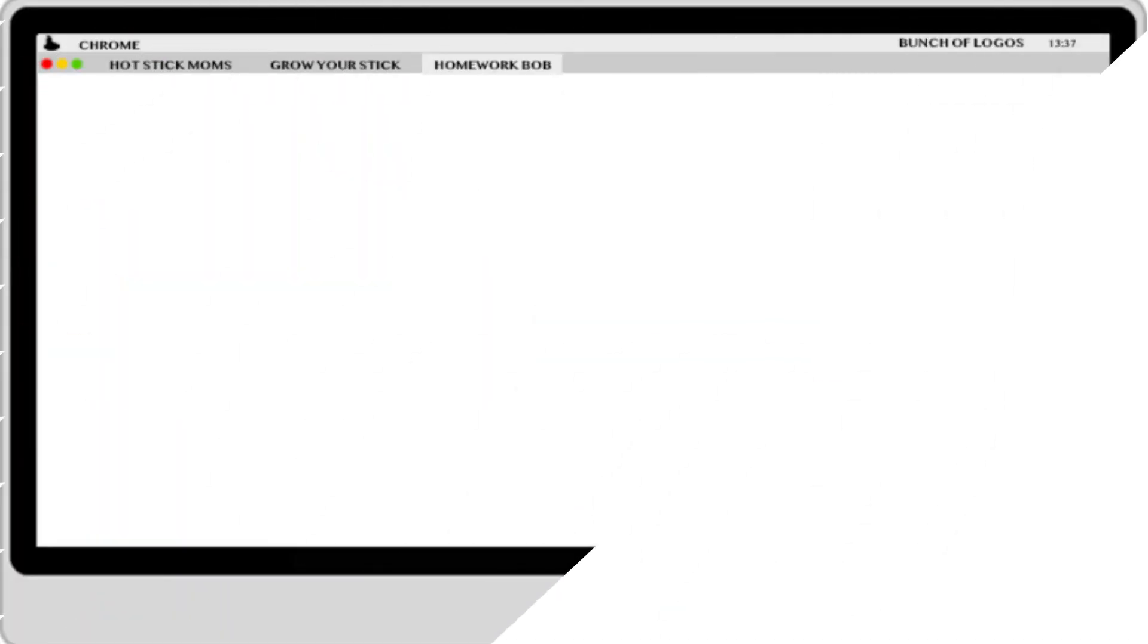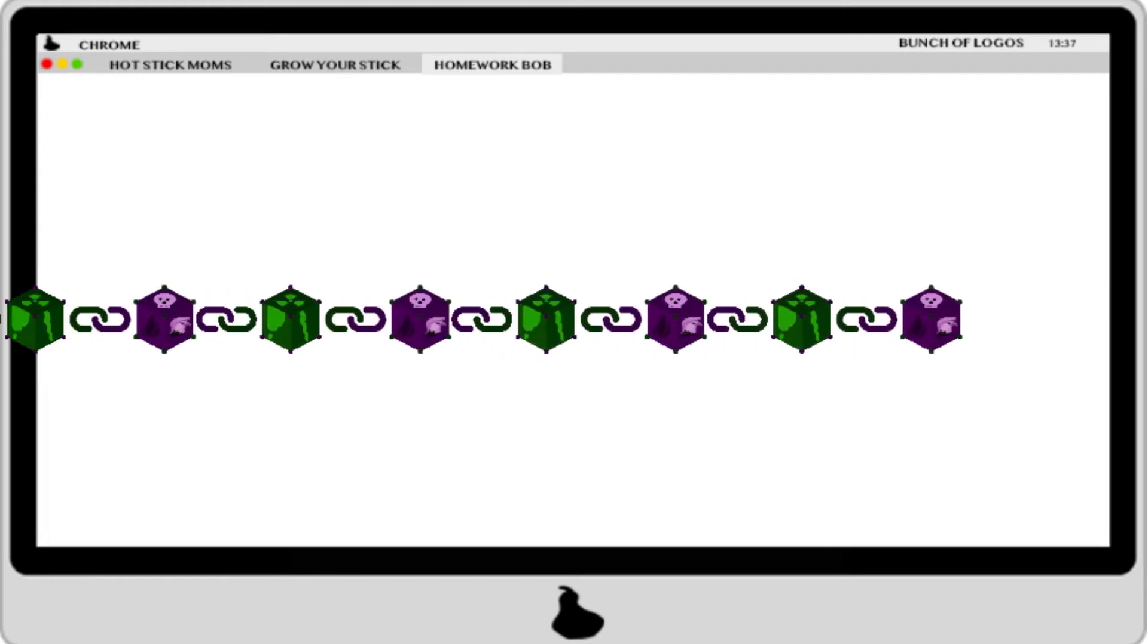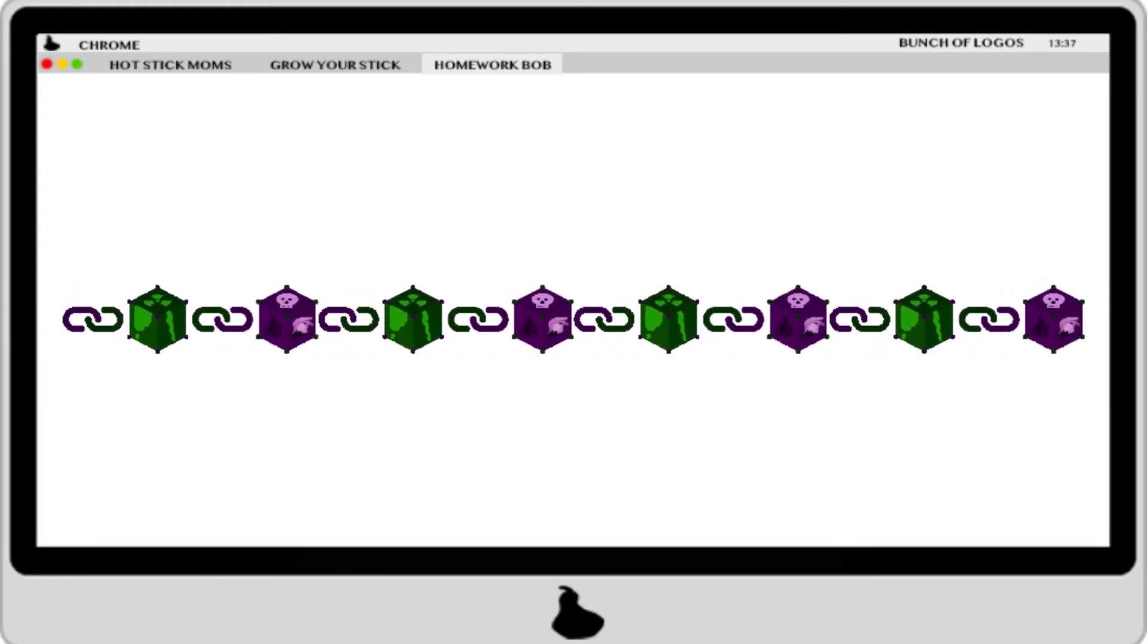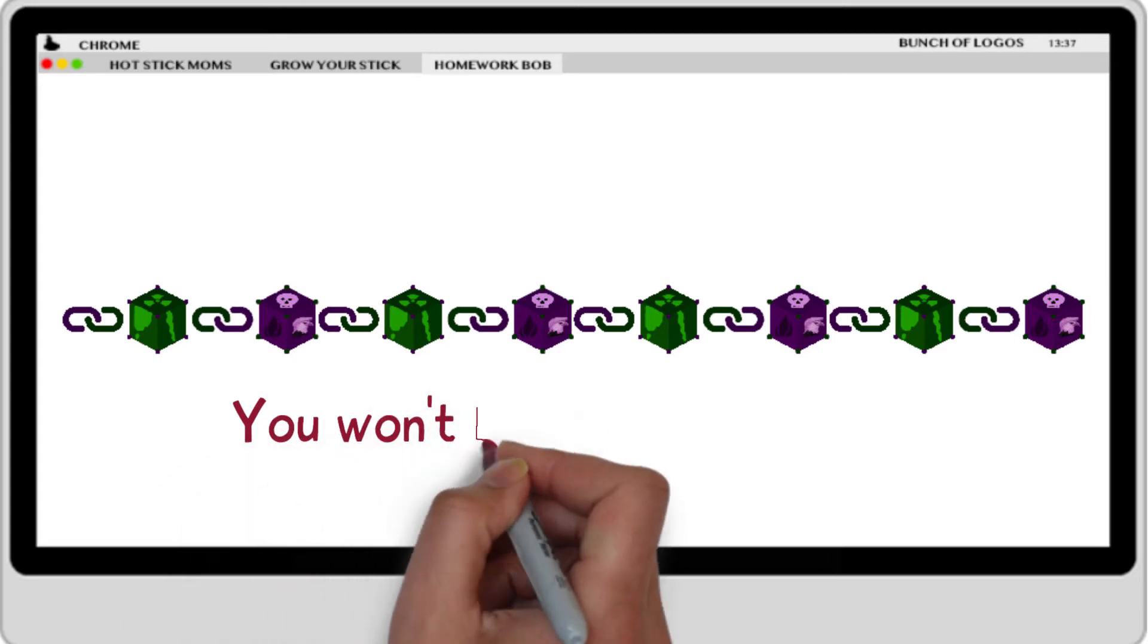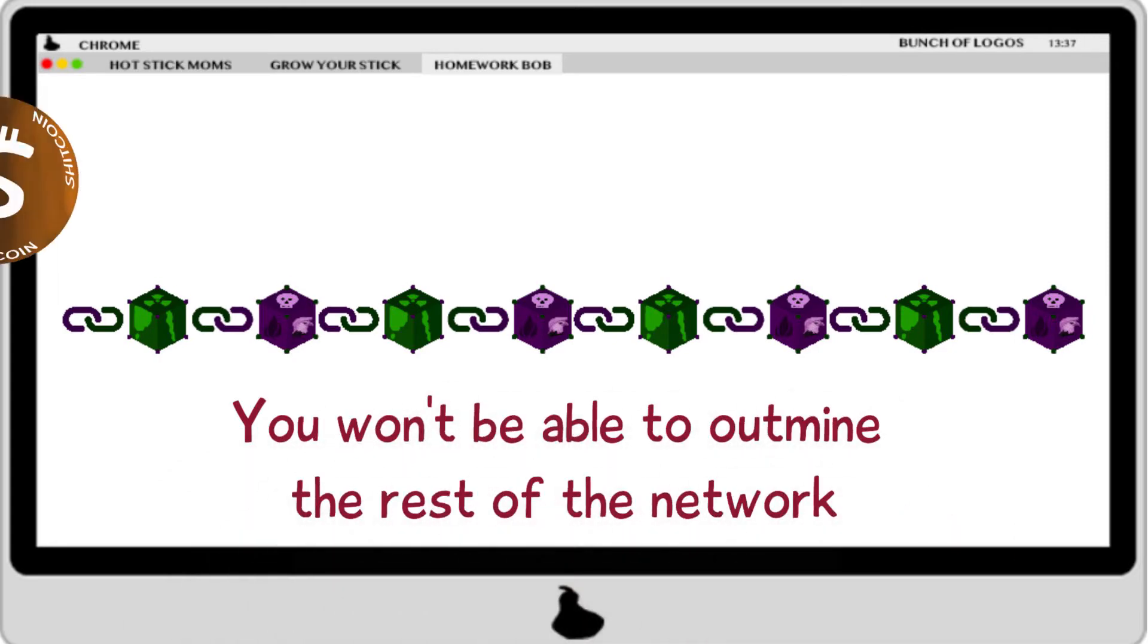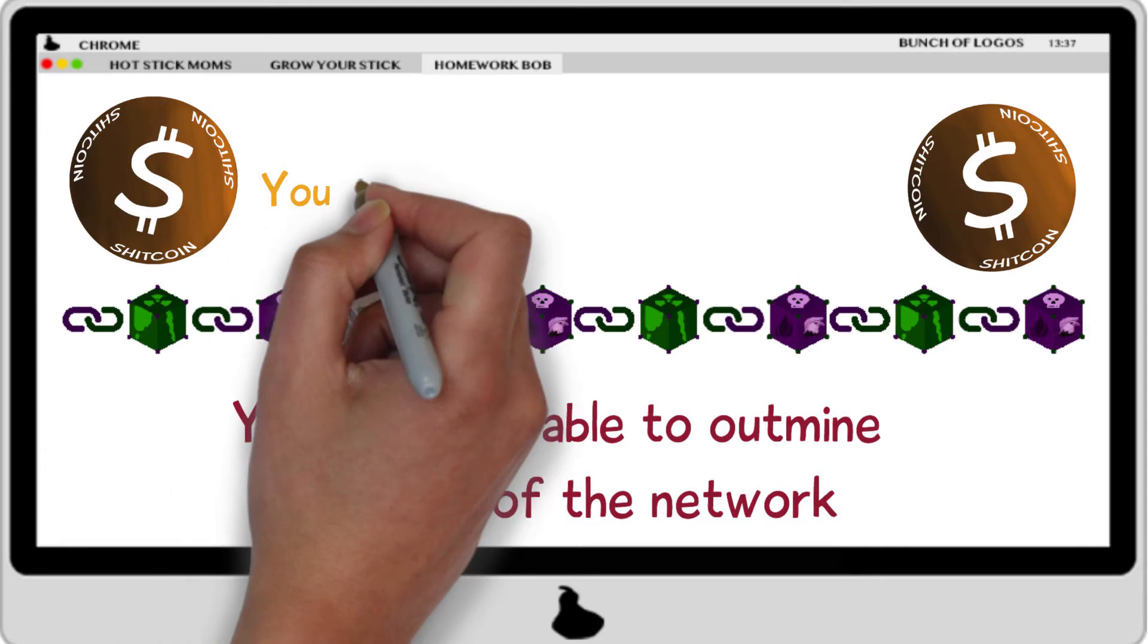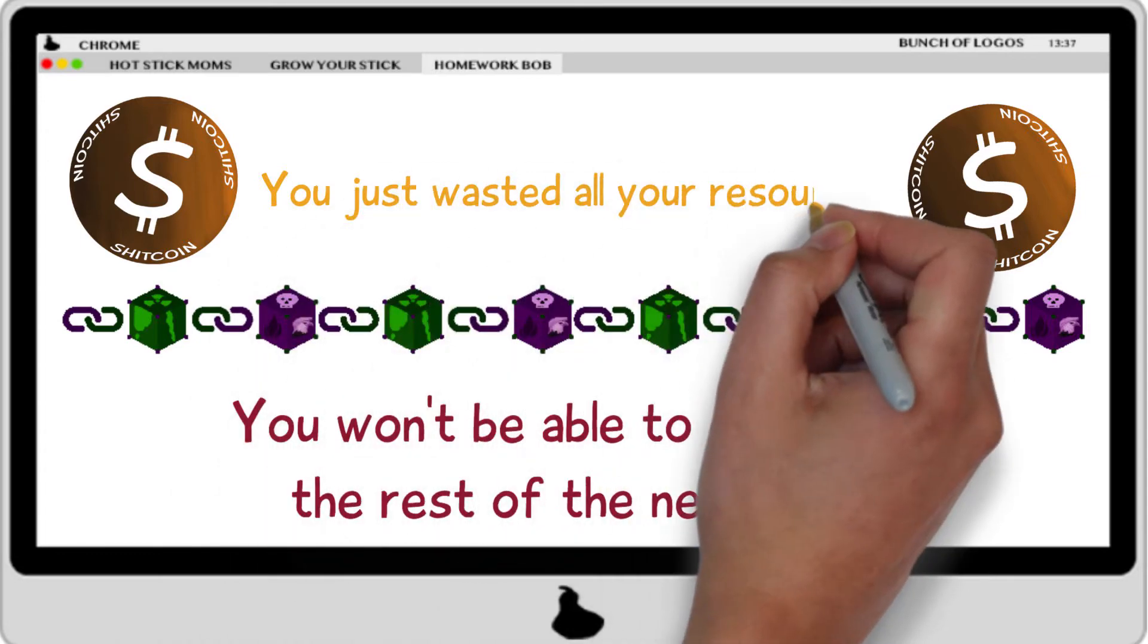This explains why people want to put their computational power into mining on the current chain. Because putting effort into trying to build a corrupted chain will waste your resources since you won't be able to outmine the rest of the network. This way you'll end up with useless coins on a branched chain that is rejected by the network because it isn't the longest. You just wasted all your resources without any gain.